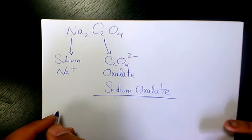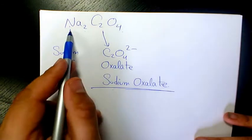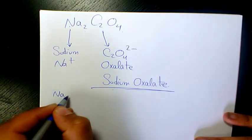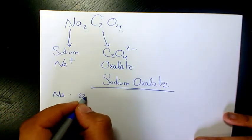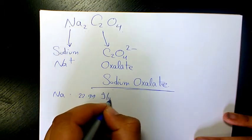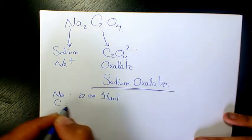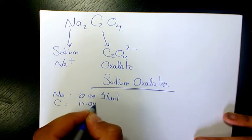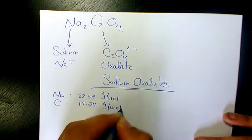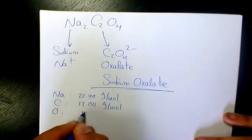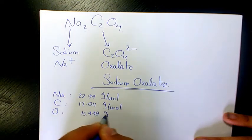And the molar mass, for finding molar mass, we need to find out the atomic mass of each of these elements. Sodium is 22.99 grams per mole. Carbon is 12.011 grams per mole. Oxygen is 15.999 grams per mole.